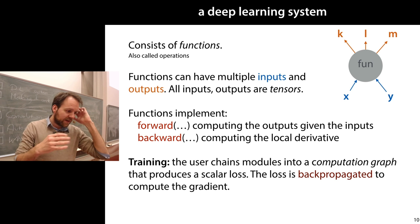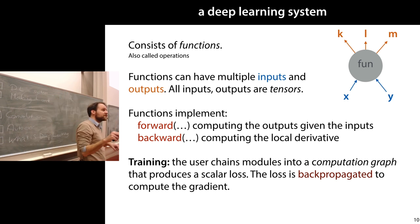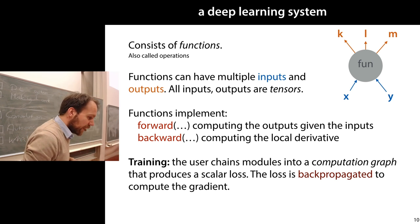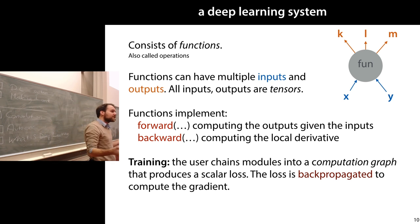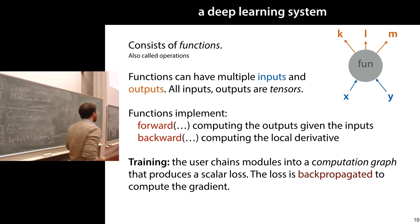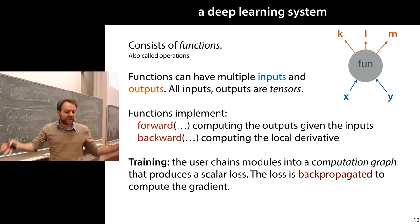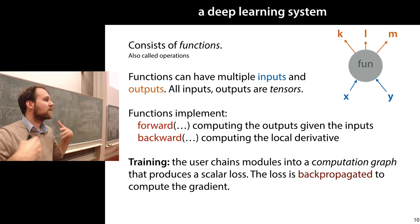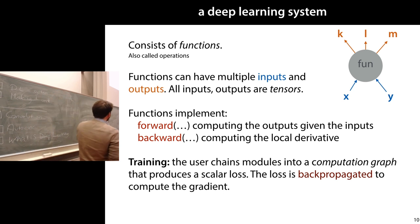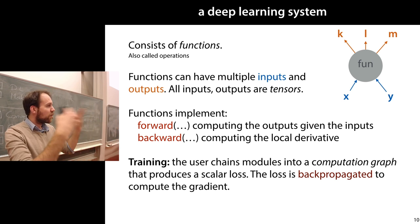Once we've defined lots of functions this way, we can chain them together to build a computation graph from data to our loss. Because we have this computation graph, we can implement backpropagation - taking the loss and backpropagating it through the whole graph, computing the gradient at every node by calling all these backward functions. Once we have the gradient for the whole computation graph, we can do a step of gradient descent and update the parameters.